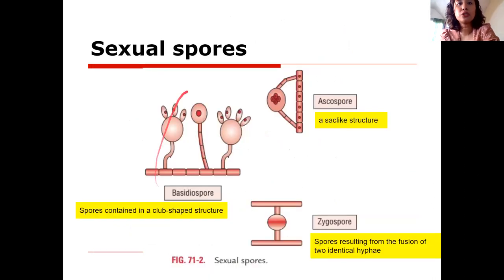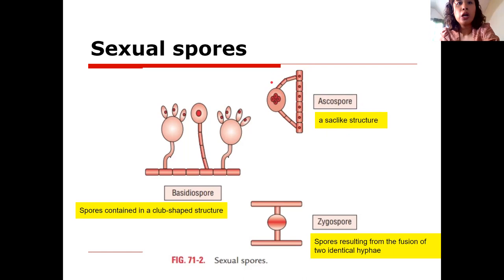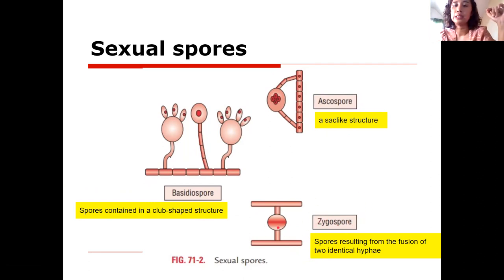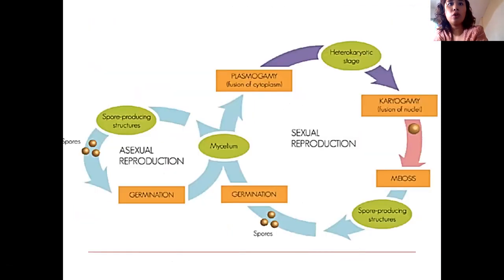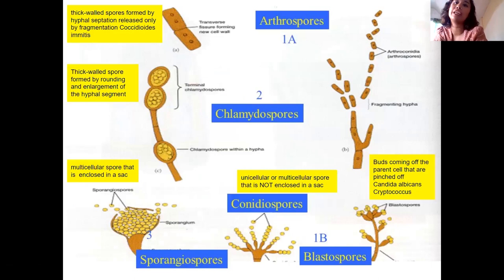Other sexual spores include: ascospores — sac-like, where two hyphae fuse together; basidiospores — club-shaped structures; and zygospores — spores resulting from the fusion of two identical hyphae. For sexual reproduction, we have three spore types: ascospore, basidiospore, and zygospore. For asexual reproduction, we have five types: arthrospores, chlamydospores, sporangiospores, conidia, and blastospores.